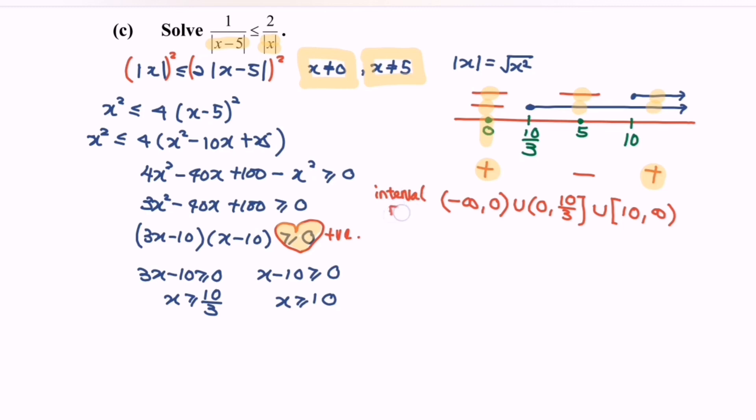What we call this is the interval form. So express the situation in set notation: set solution x such that x is less than 0, or the value of x is greater than 0 but less than equals to 10 over 3, or x greater than equal to 10. So this will be the solution set.